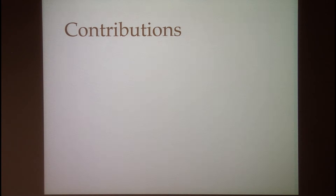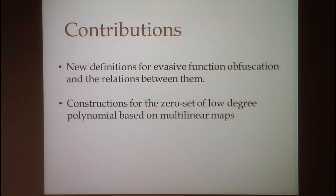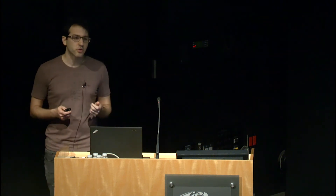In this work we have a few different types of contributions. First, we give new definitions for evasive function obfuscation and study the relations between those definitions and VBB. We also construct obfuscators for a large class of evasive functions that describe the set of zeros of a low degree polynomial, based on multilinear maps. Finally, we show some interesting connections between evasive functions and the weaker notion of obfuscation called virtual gray box — specifically, virtual gray box obfuscation for evasive functions actually implies virtual gray box obfuscation for all functions.